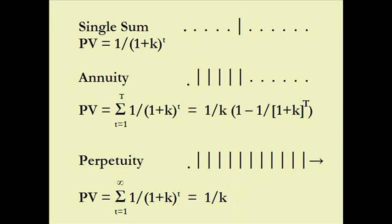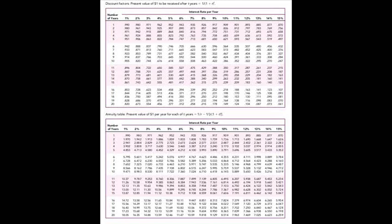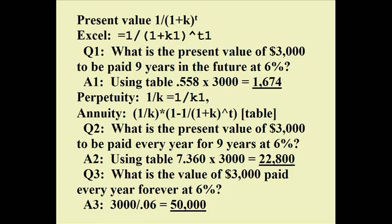Here are some typical present value tables. The top one is for the single sum — the factors are always less than one because the amount you start with is smaller than the final amount. The bottom table is the accumulation of the top table figures from period one through some time period — those are annuities. Notice that if you go all the way to the end, it approaches a perpetuity figure.